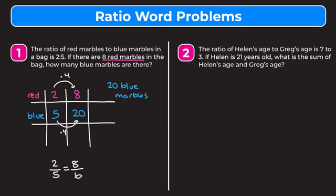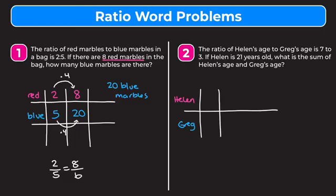Let's take a look at example two. The ratio of Helen's age to Greg's age is seven to three. If Helen is 21 years old, what is the sum of Helen's age and Greg's age? We're going to do the same thing and set up a table — we'll put Helen's age on top and Greg's on the bottom. We always start by filling in the original ratio, which is seven to three.